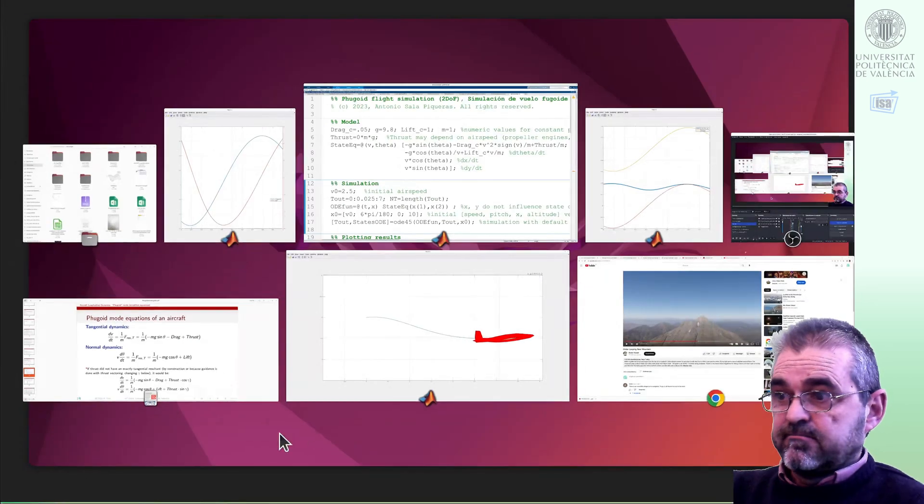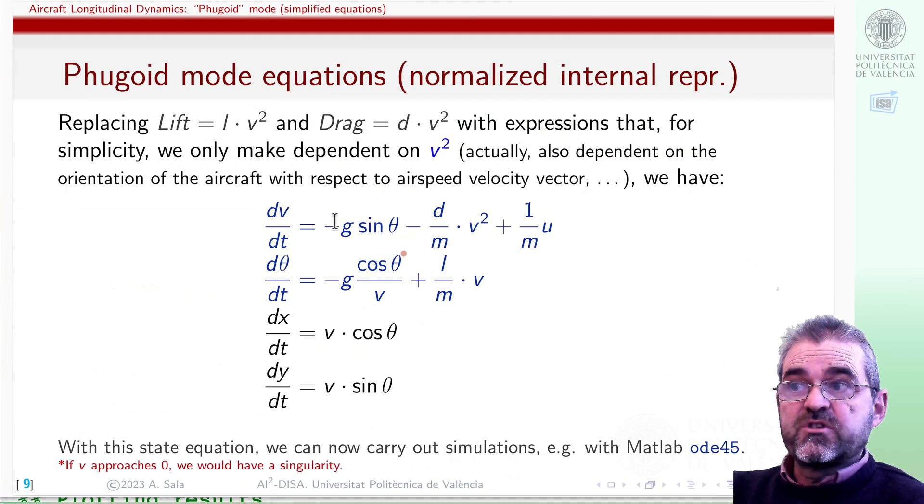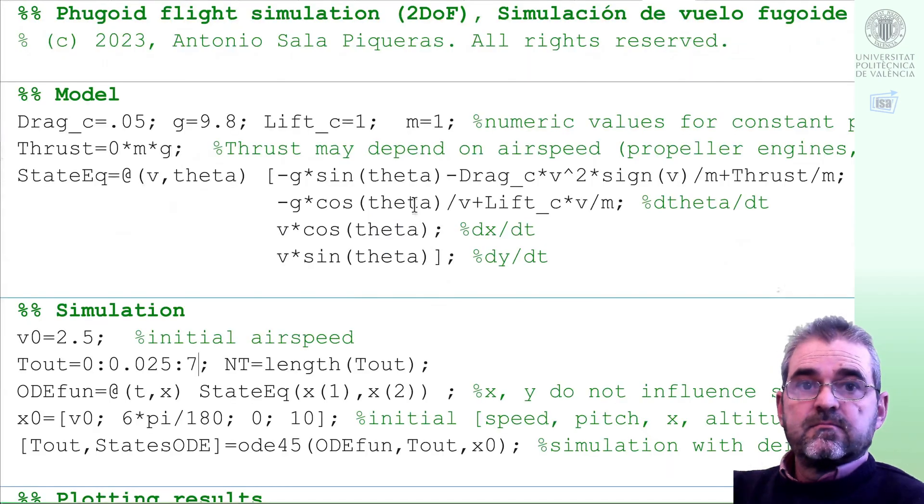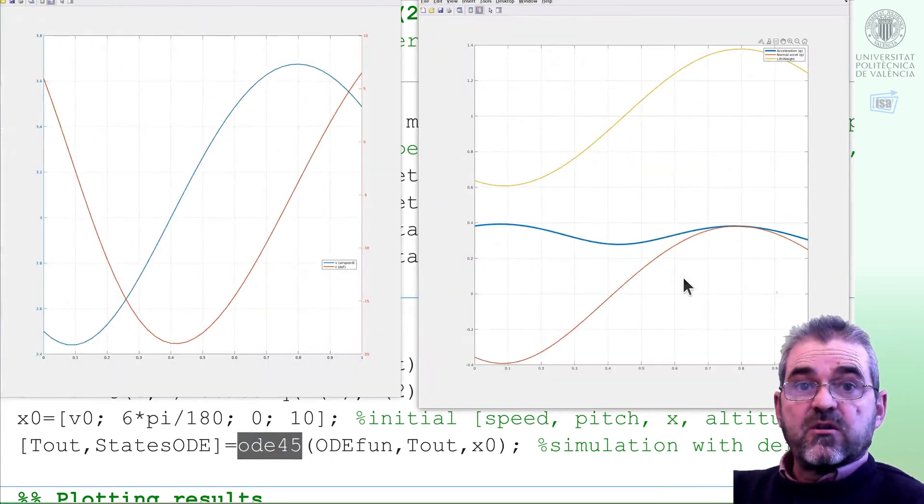So we'll end with this. Let's summarize. In this video we have shown MATLAB code to simulate these 4 equations which constitute the simplified model of the so-called fugoid mode in flight dynamics. Modeling and simulation was based in ODE45 and we provided code to picture some time plots.